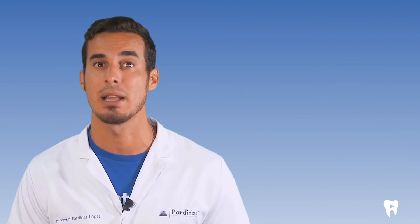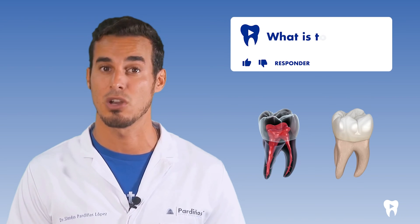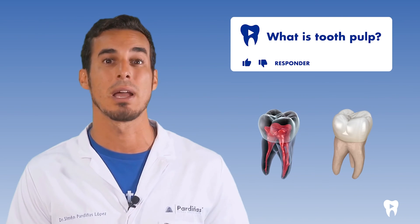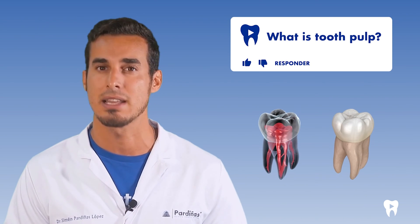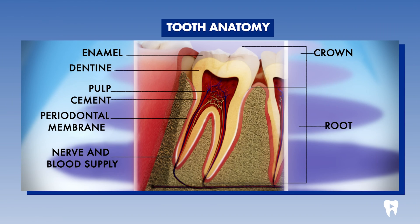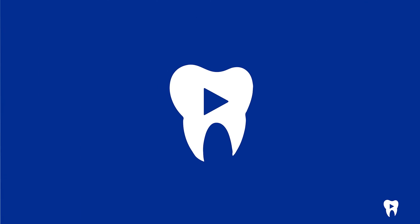The pulp is the soft tissue that contains the nerves, blood vessels and connective tissue of the teeth. It is located inside the tooth and is covered by dentin and enamel, two protective layers. The pulp extends from the crown, the visible part of the tooth, to the roots and serves to connect this tissue with the rest of the body, allowing it to nourish itself.